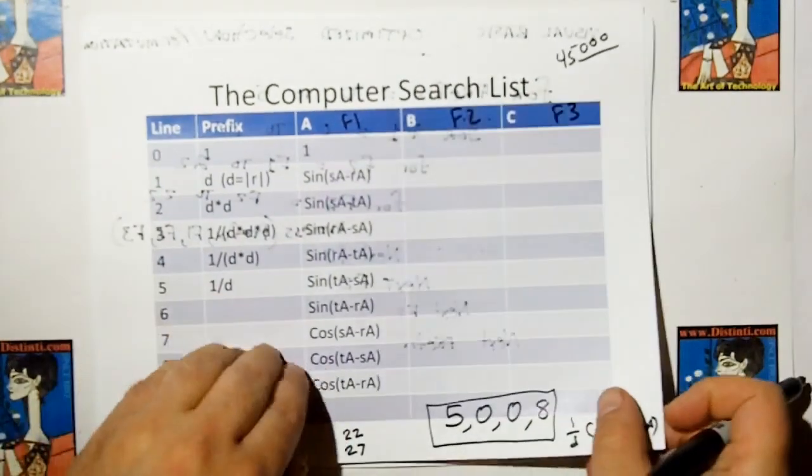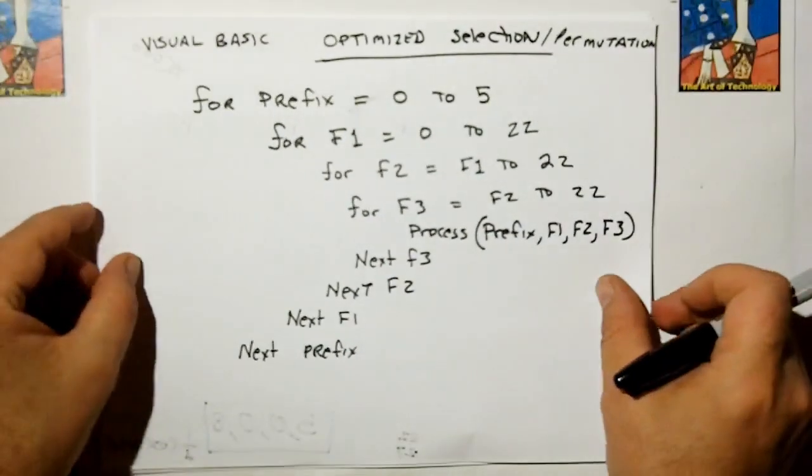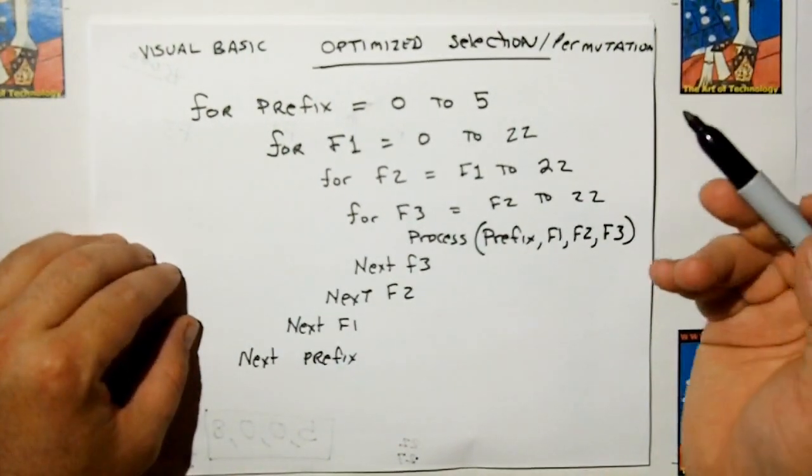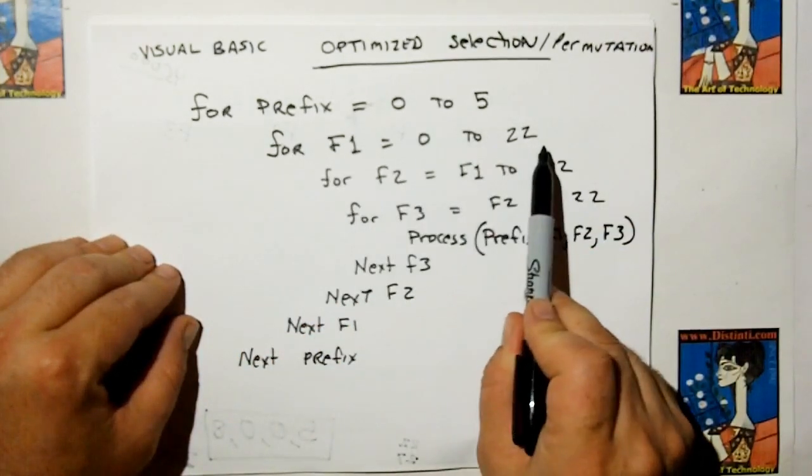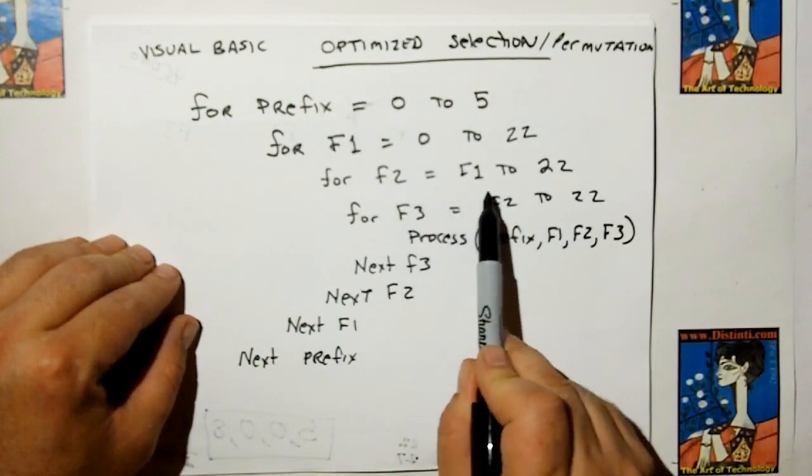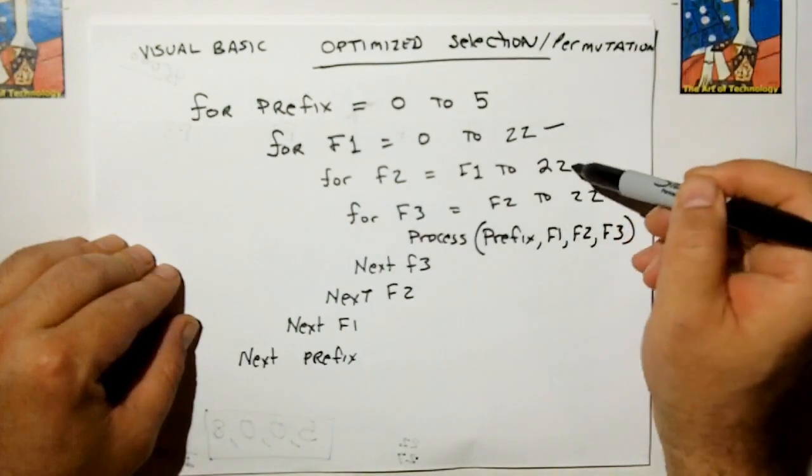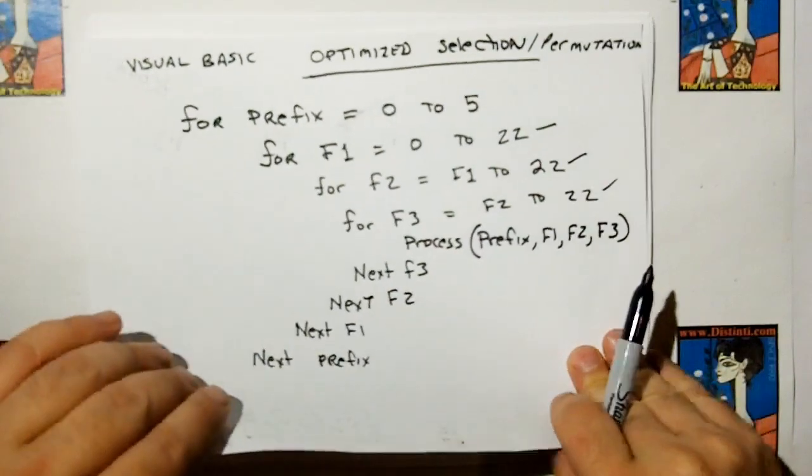Now here's the nonsense on the back. There's a simplification to reduce the optimization, and this is the solution for the optimization. Basically, for each prefix, and for each F1 column, F2 will never start below F1, and F3 will never start below F2. These 22s are how many elements you have in the geometry columns. And you can read the rest of that on your own. I'm not going to go through that.